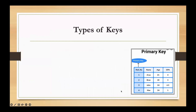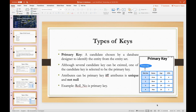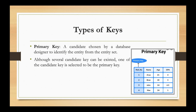Primary key: now, what is the primary key? The primary key is the candidate key chosen by a database designer to uniquely identify the entity. Although multiple candidate keys can exist, only one of the candidate keys is selected to be the primary key.